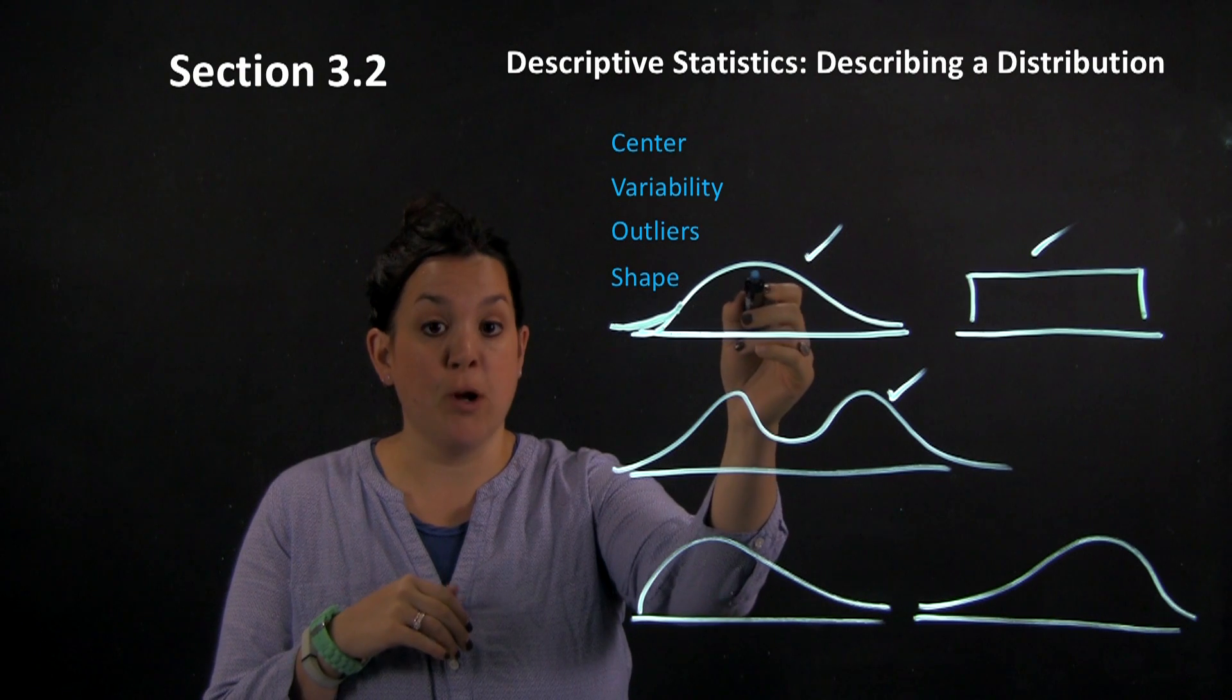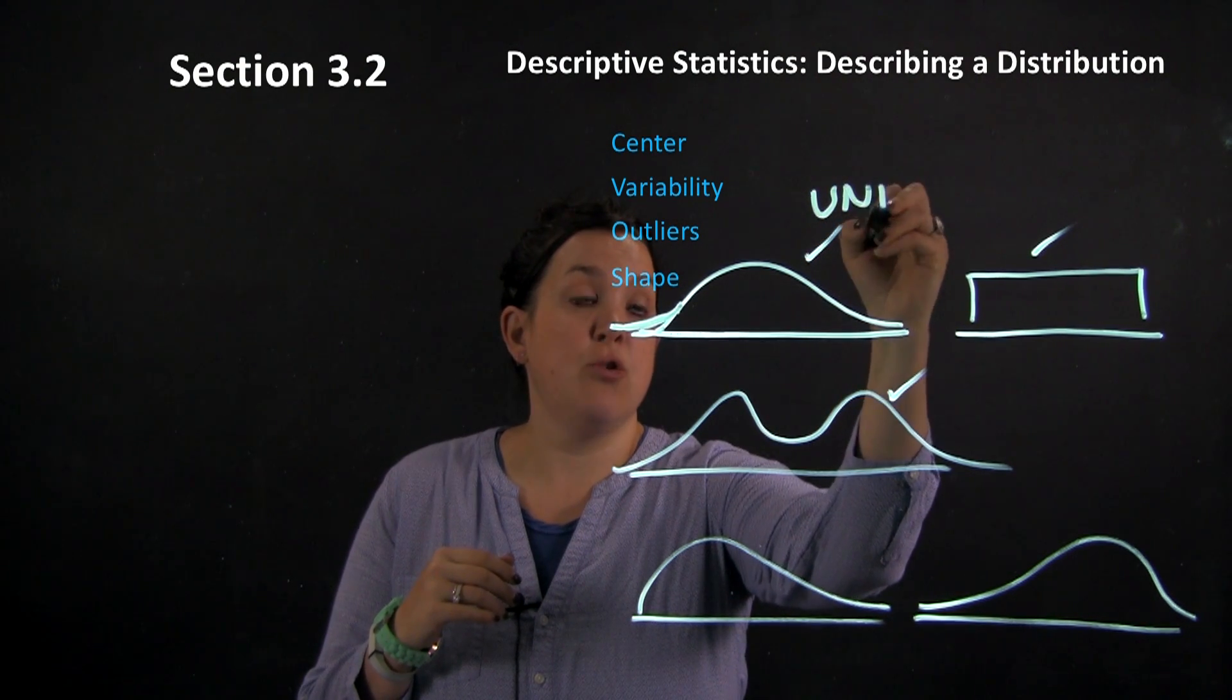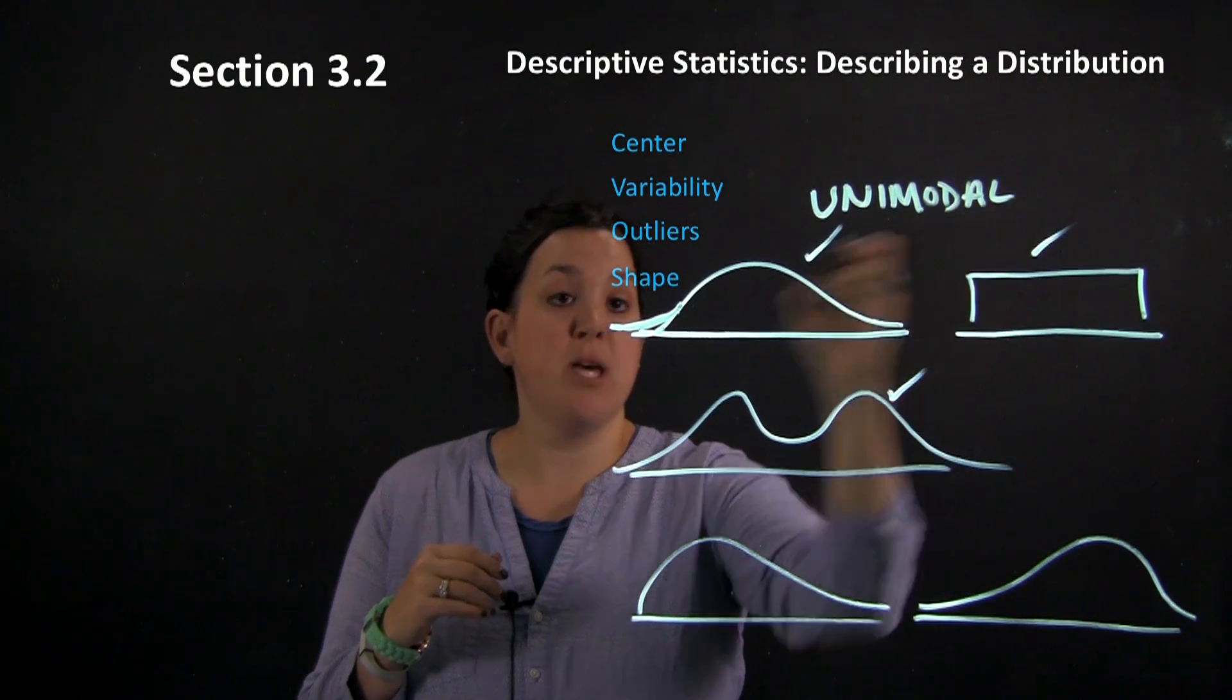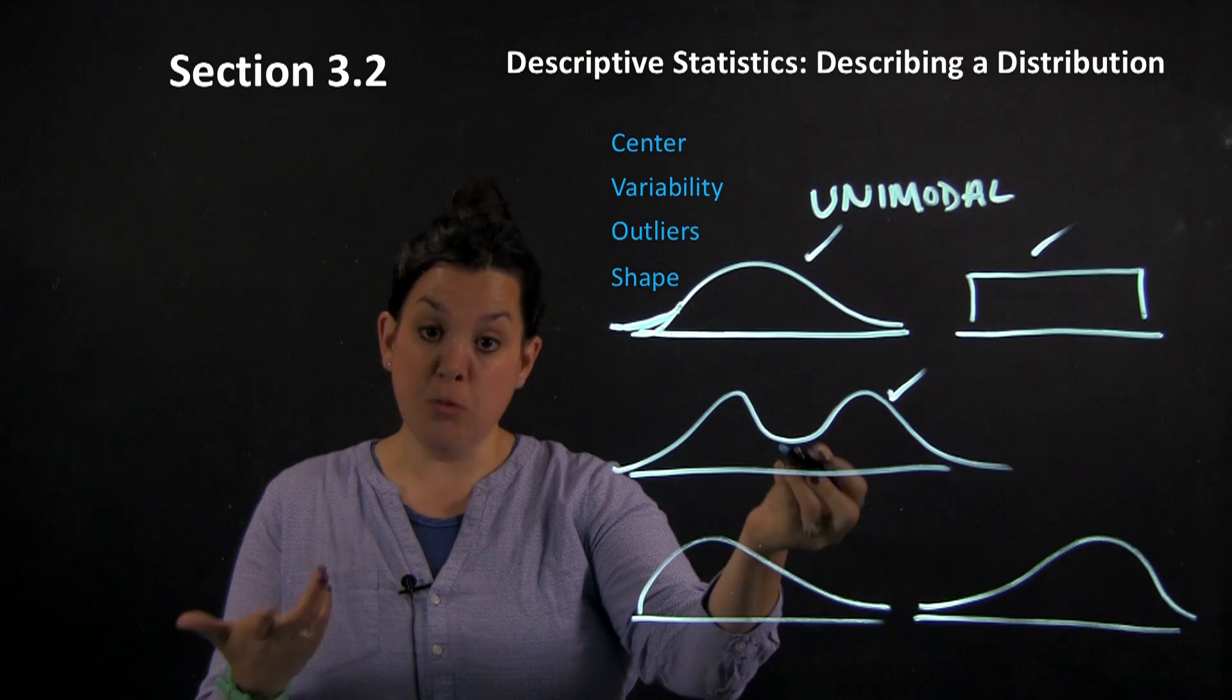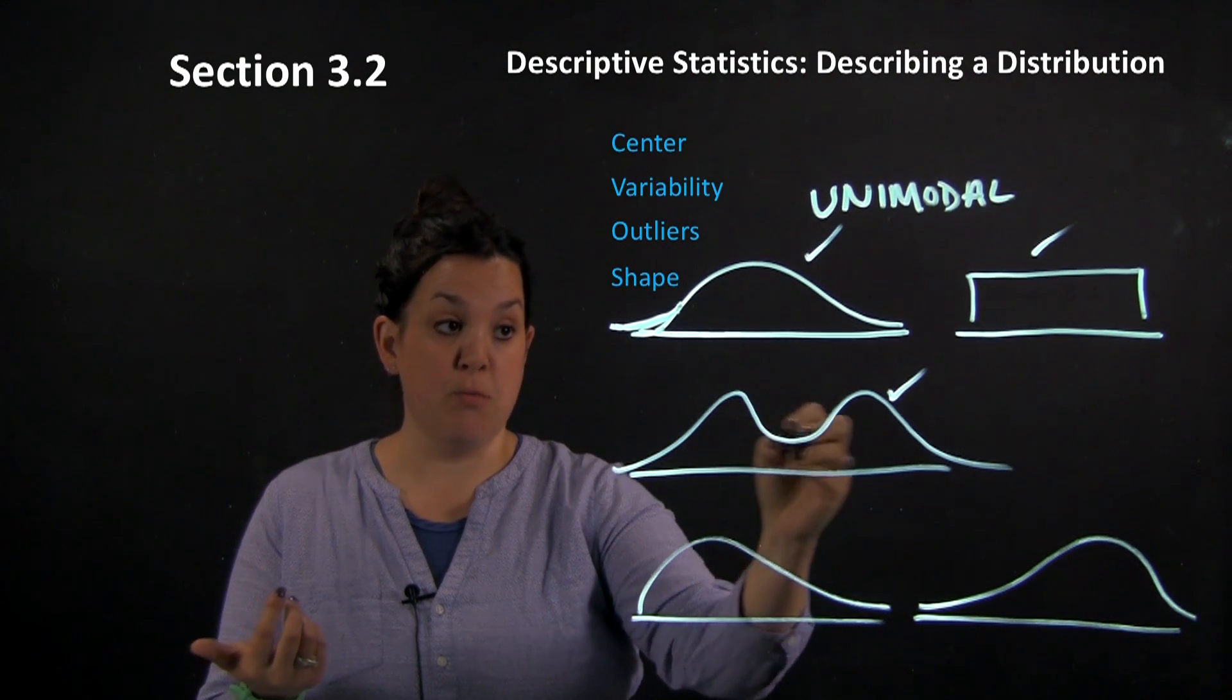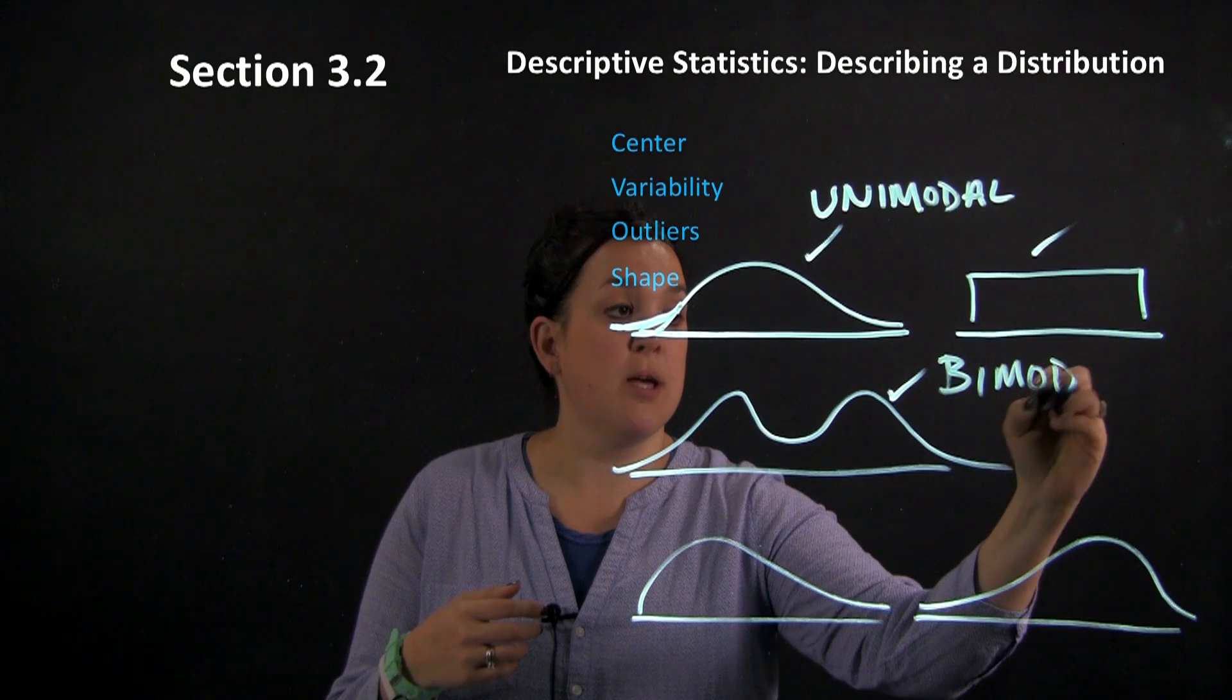When you look at this one, it has one peak or it would be described as unimodal. So we have one peak, so a moment where it's peaking and then falling once.